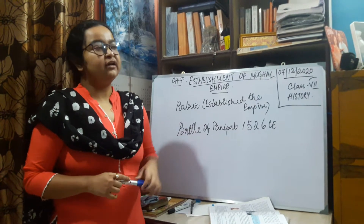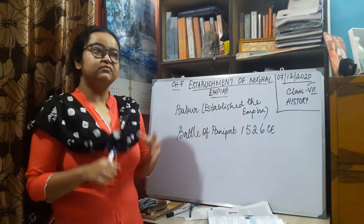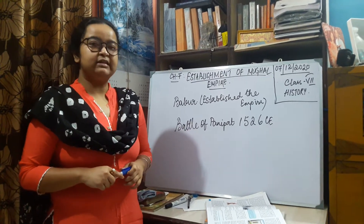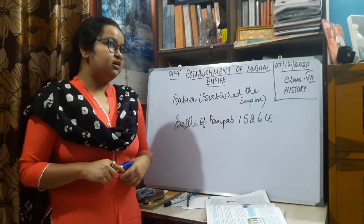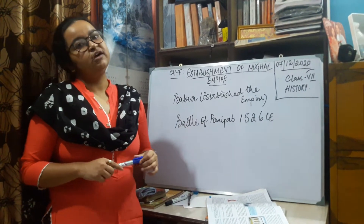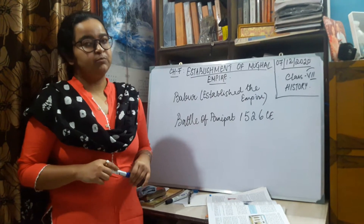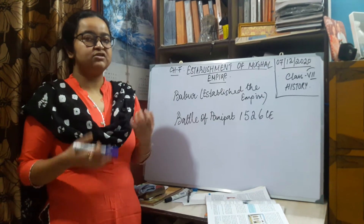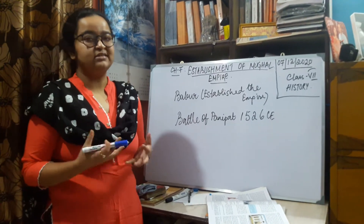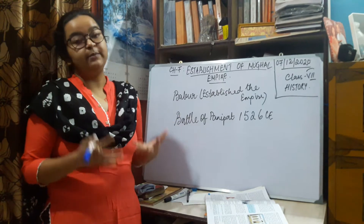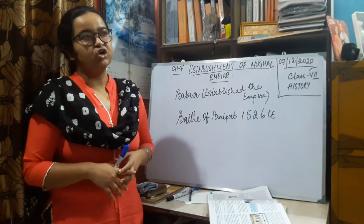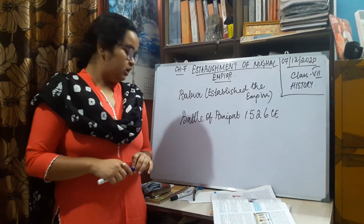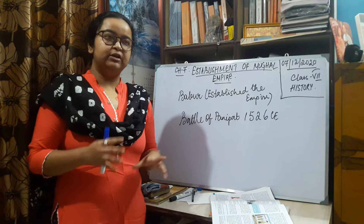Babur had inherited the place of Farghana from his father, located in the Central Asian region. He also conquered Samarkhand, but both of these places were lost. He then struggled to regain his territories and also struggled to become the ruler of Kabul. Meanwhile, what happened in India?